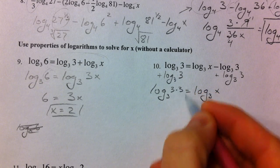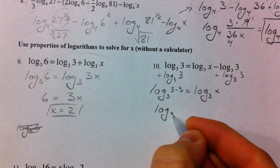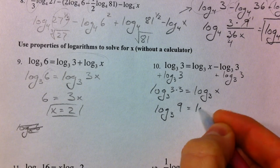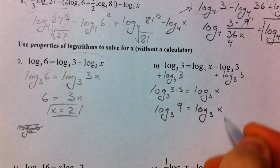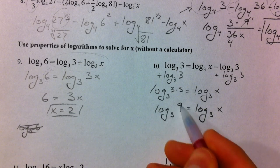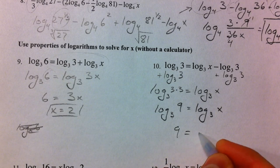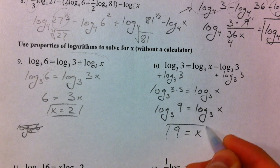So that's 3 times 3 or log base 3 of 9. Log base 3 of x. Log base 3 of 9 equals log base 3 of x. And so 9 has to equal x. No other way.